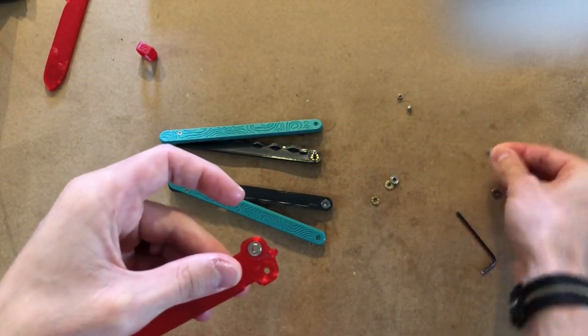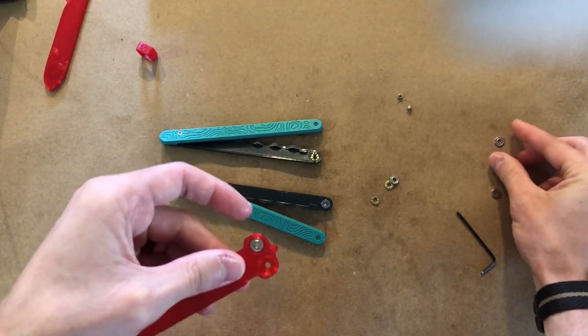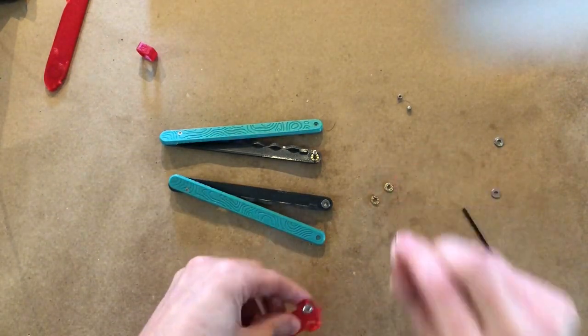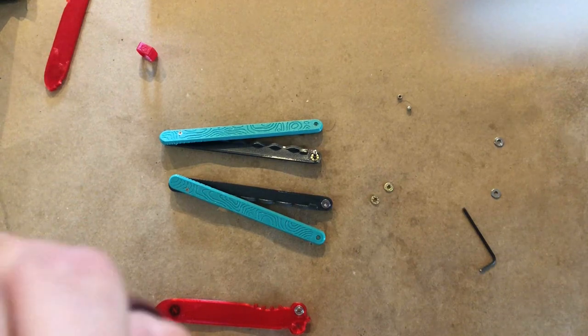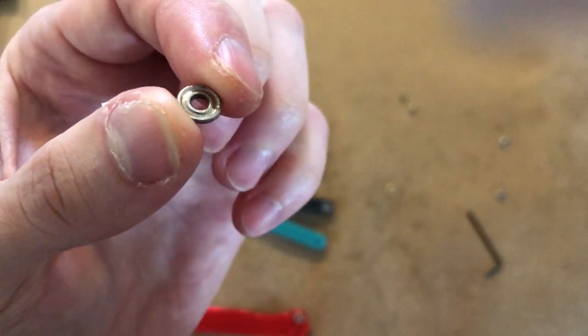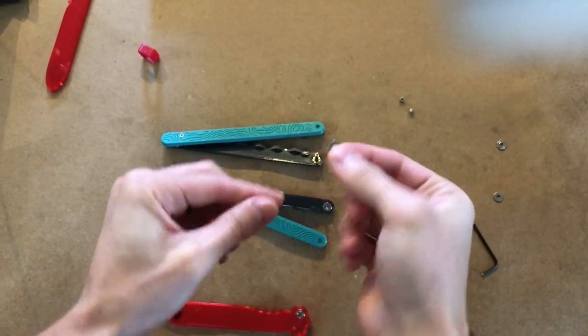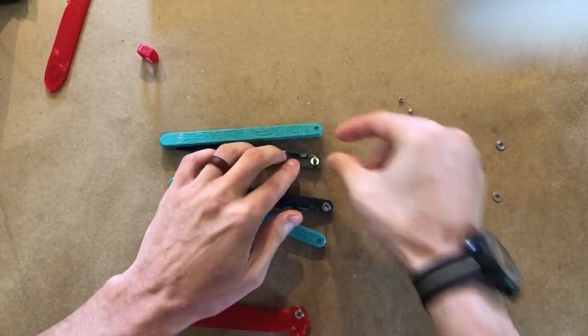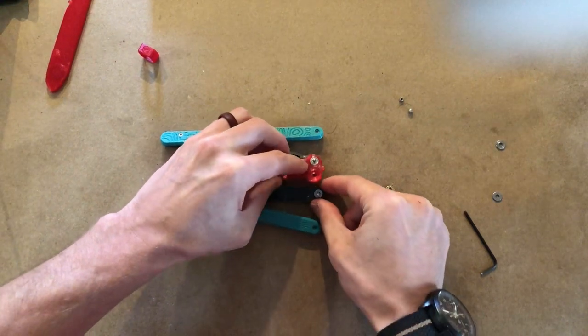So this is a round top one. I'm going to set that aside. That goes in the handle. And then I have a flat top one here. That is going to be touching the blade so we'll put that on top. And then I'll put the blade on.